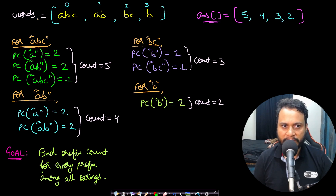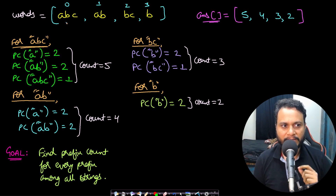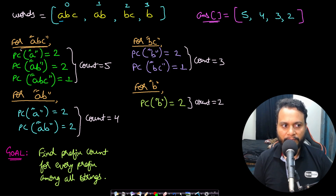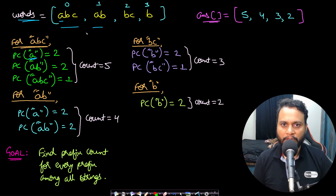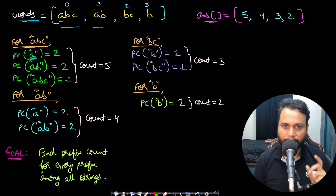Assume we are given four words: 'abc', 'ab', 'bc', and 'b'. For the first string 'abc', it has three prefixes — 'a', 'ab', and 'abc'. If we take prefix 'a' and find how many strings in the words array have 'a' as a prefix, it occurs in 'abc' and 'ab', contributing a count of two to the overall total.